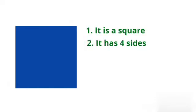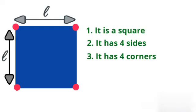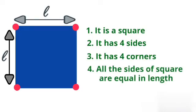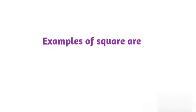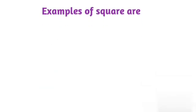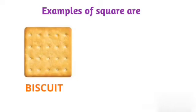It has four corners. All sides of square are equal in length. Some examples of square are biscuit and window.